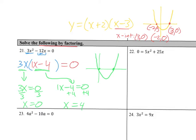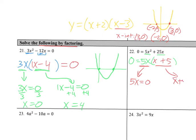For the one labeled 22, I can take a 5x out of both terms, leaving me with just an x and a plus 5. Because this multiplies to get 0, either 5x equals 0 or x plus 5 equals 0. Solving the first one, dividing by 5, we get x equals 0. Subtracting 5 from both sides, we get x equals negative 5.